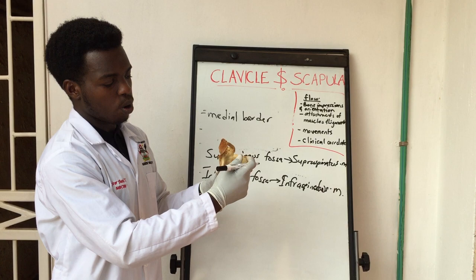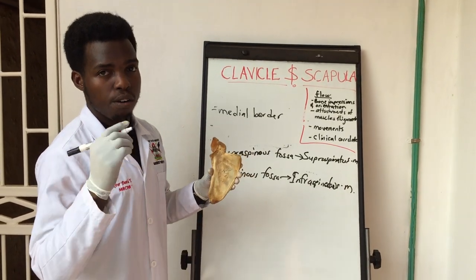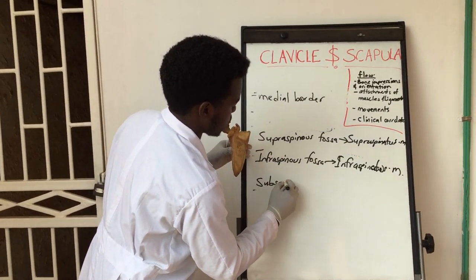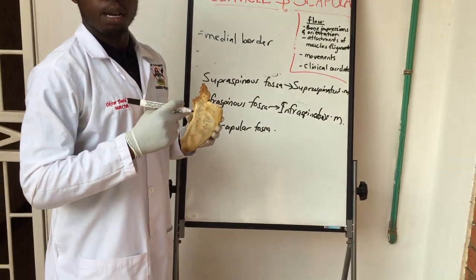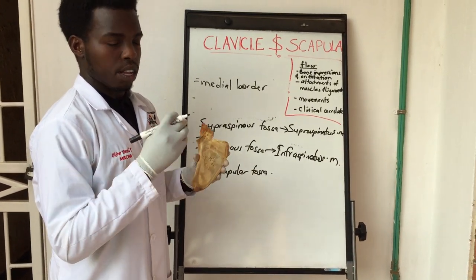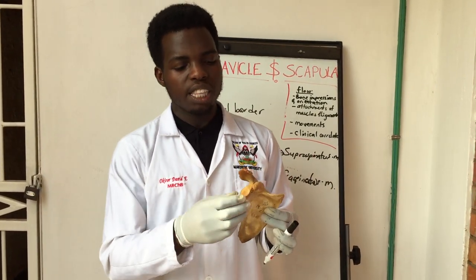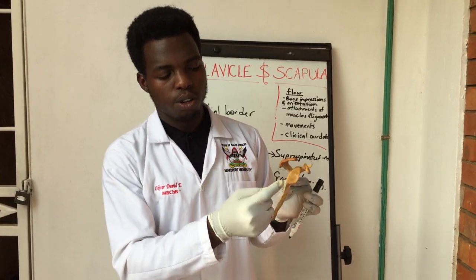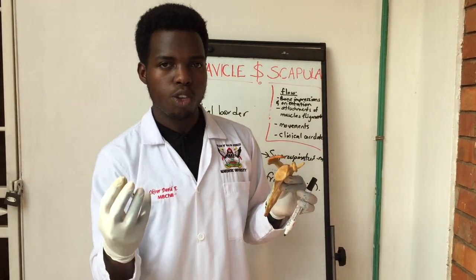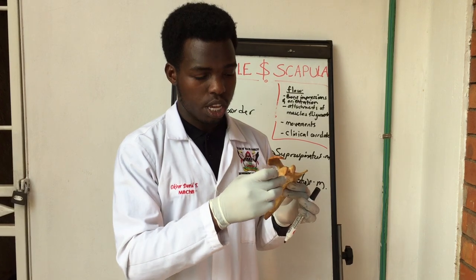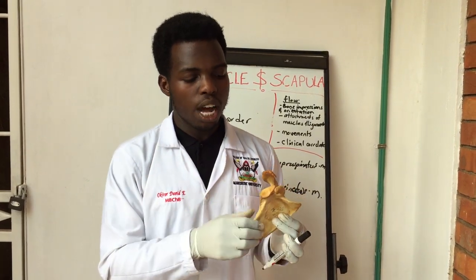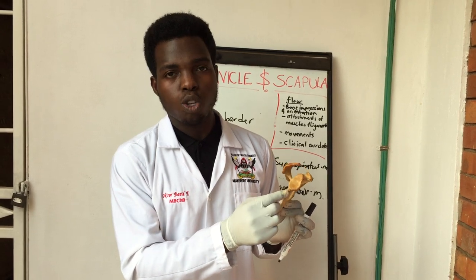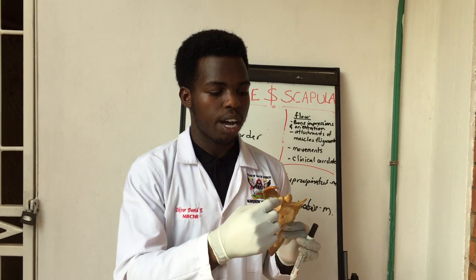Coming anteriorly, there is a convex surface known as the subscapular fossa, where the subscapularis muscle attaches. Laterally, we have the glenoid cavity where the head of the humerus articulates to form the glenohumeral joint. One thing to note is that the glenoid cavity is shallow, which makes the glenohumeral joint not strong enough on its own, so other structures are needed to strengthen it.